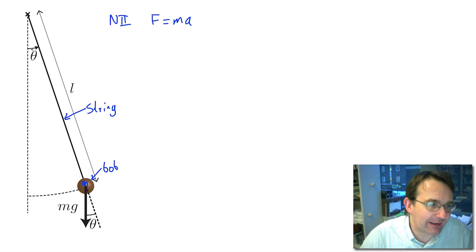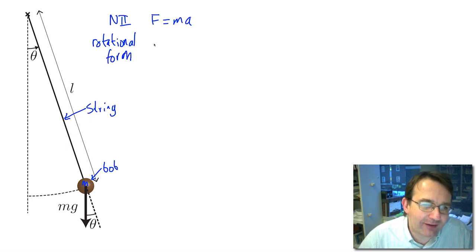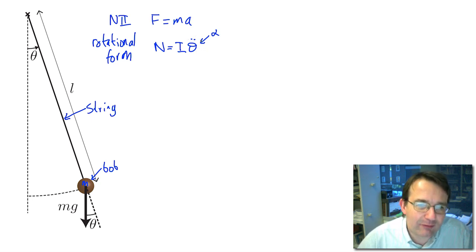The string hangs vertically at the equilibrium position, and we have a displacement through an angle theta. So instead of using the linear form of Newton's second law we need to use the rotational form. What we have is that the moment of force acting on the system equals the moment of inertia times the angular acceleration, which we write as theta-double-dot, or sometimes with the symbol alpha. This is the angular acceleration; the dot notation means we're differentiating with respect to time, so this is d²θ/dt².